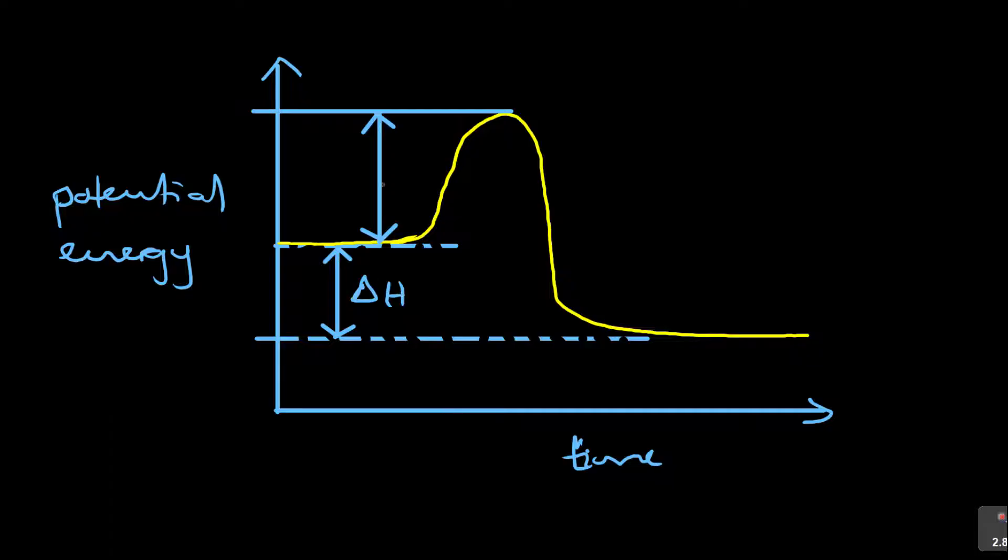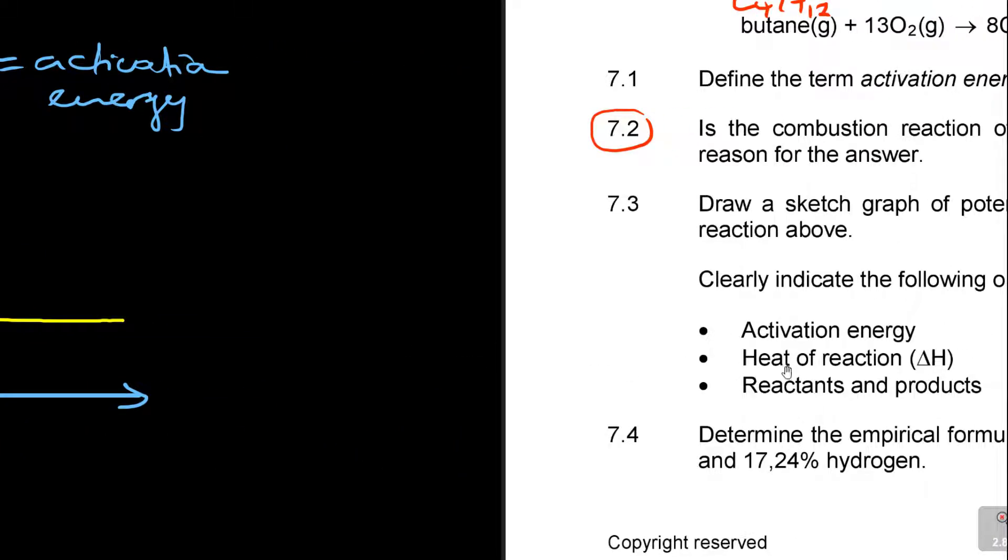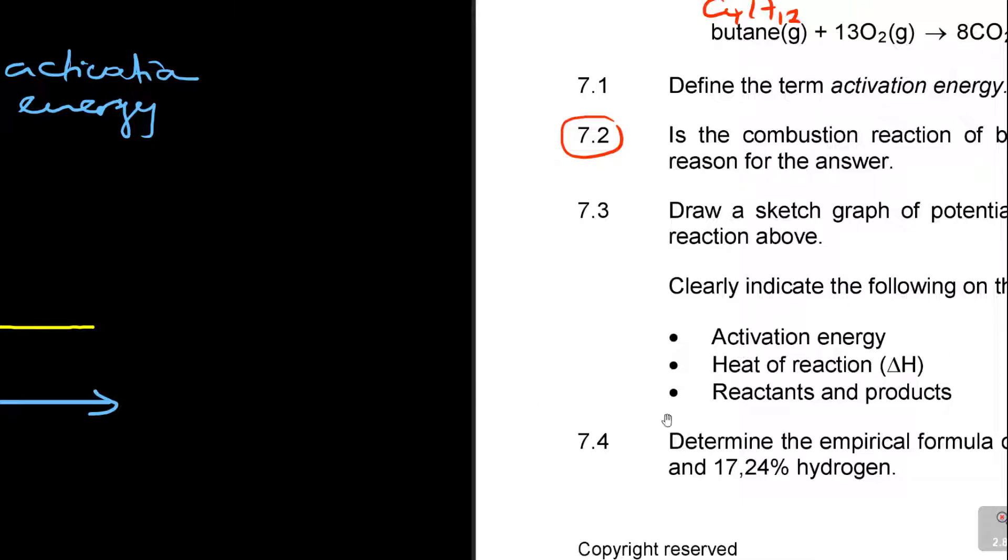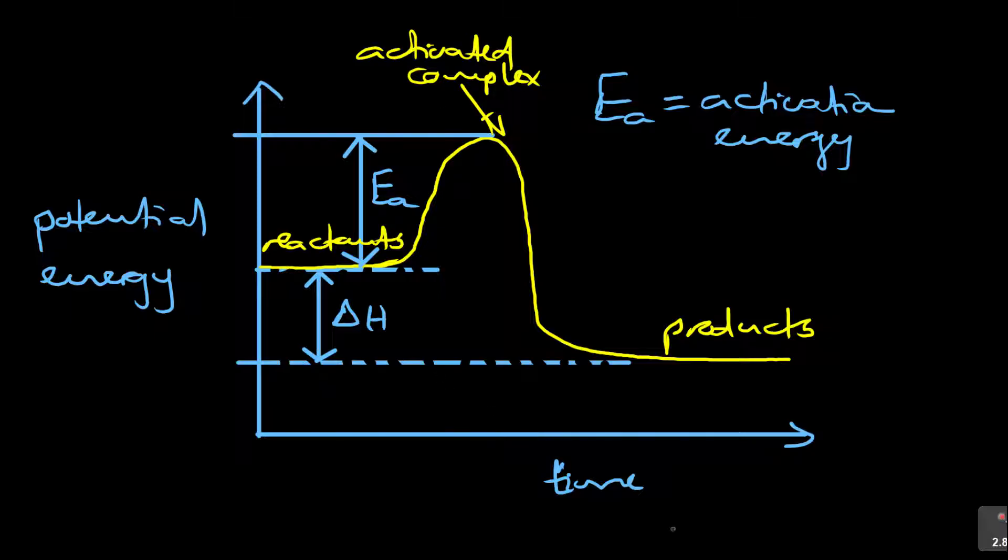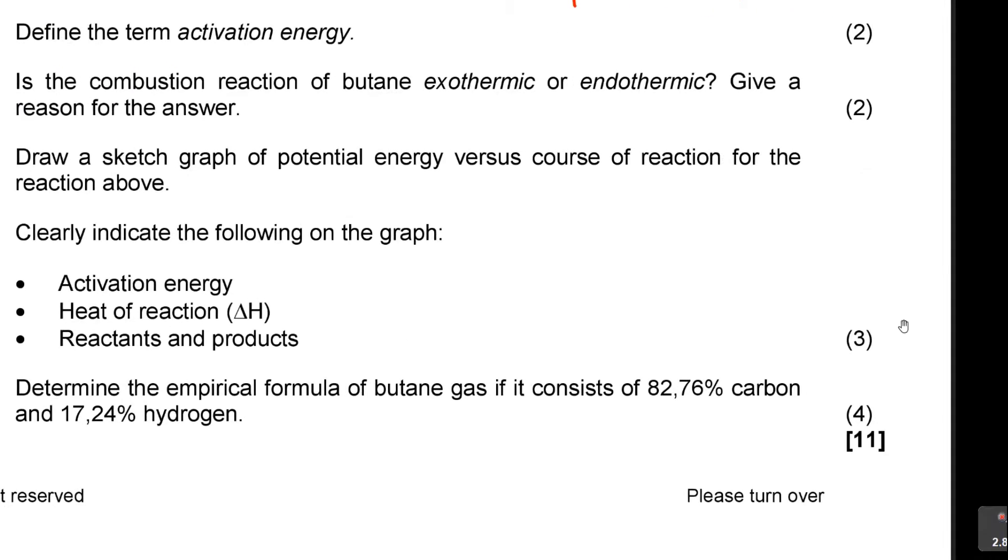So this is delta H, the heat of reaction. And then this is Ea, where Ea is equal to activation energy. Because they told us show us the reactants and products, delta H, the heat of reactions we have done it. Activation energy, we have done it. And then reactants and products. So these are the products here. Then these are the reactants. And then if it was extra, we are going to call this the activated complex, but they didn't ask it. Sometimes they ask for it. This is what will give you how many marks? It'll give you three marks.